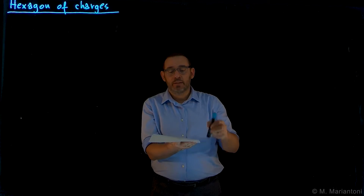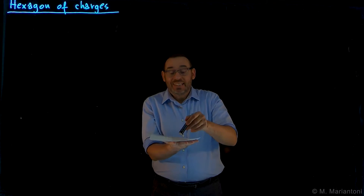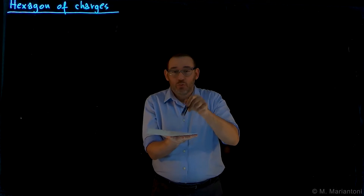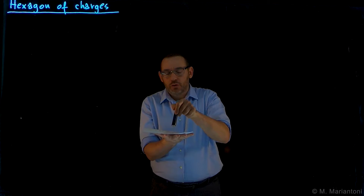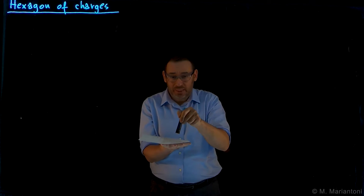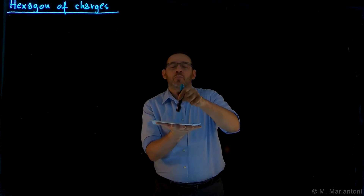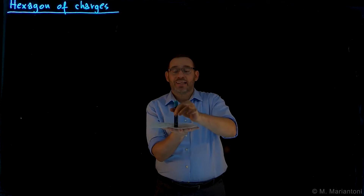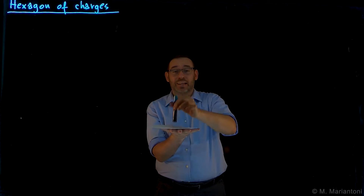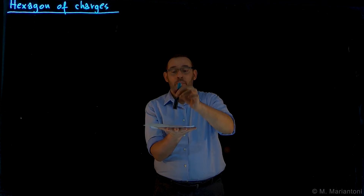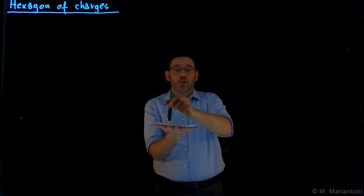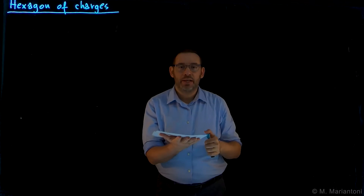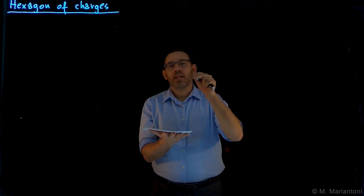We want to calculate — we will assume that there are six point-like charged particles, one at each vertex of the hexagon. We then want to place a test charge q-naught somewhere on the vertical axis of the hexagon. This axis goes to the center of the circle. On this axis, we place a test charge q-naught and we want to compute the electric force on that charge.